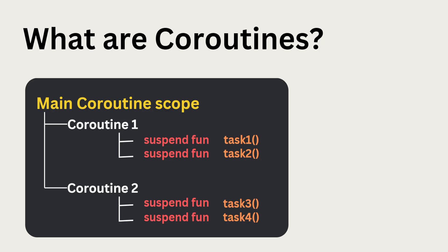Coroutines are a feature in Kotlin that allows you to write asynchronous code that is easy to read and maintain. They are much lighter than traditional threads, allowing you to run many coroutines at the same time. Coroutines use suspend functions to pause and resume code execution based on the needs and design of your project. And structured concurrency helps manage these tasks.